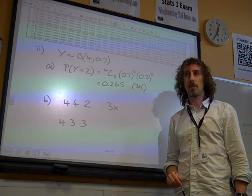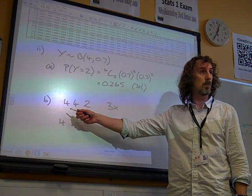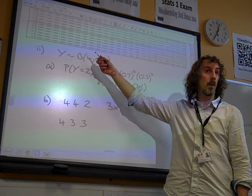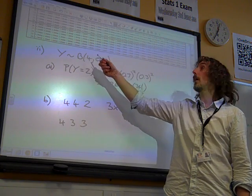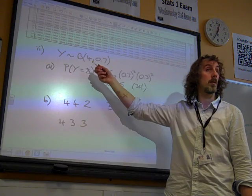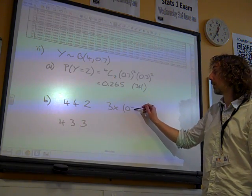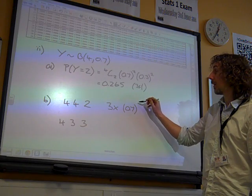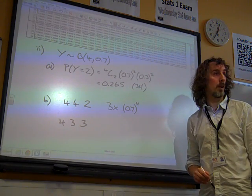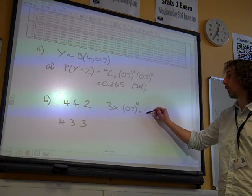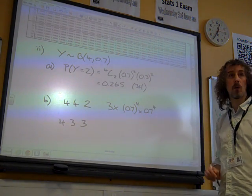And that is getting a 4 twice. Now, getting a 4 from y, the only way I could get 4 as my result of y is if I had four successes. So that is 0.7 to the power of 4 for four successes.